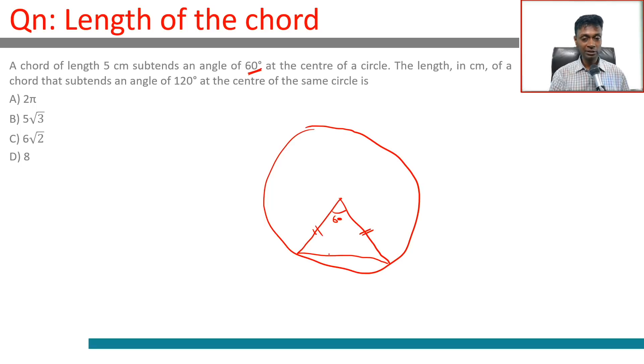Since these two sides are equal and the angle between them is 60 degrees, the other two angles are also equal and must each be 60 degrees. So the triangle is equilateral, which means our circle has a radius of 5.